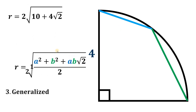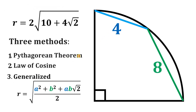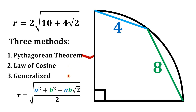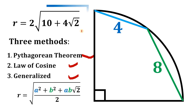Therefore, using three different methods — the Pythagorean theorem, the law of cosines, and the generalized formula — we find that the radius of this quarter circle equals 2√(10 + 4√2). And as always, we are done.